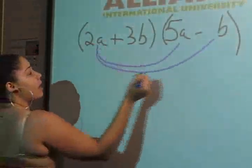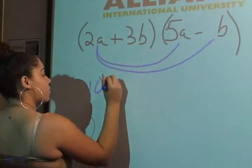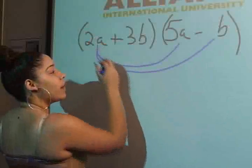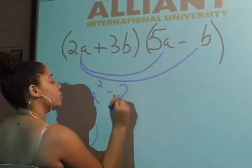And 2a times 5a is 10a squared. And 2a times negative b gives you a negative 2ab.